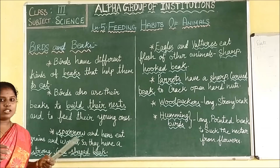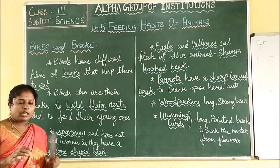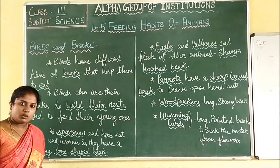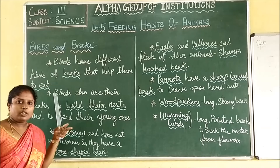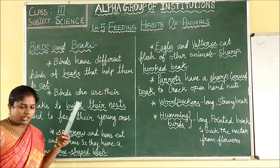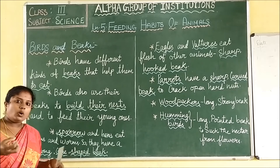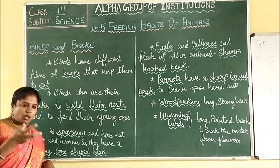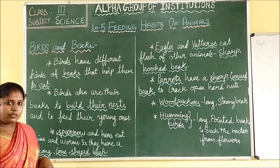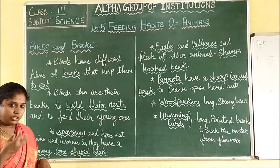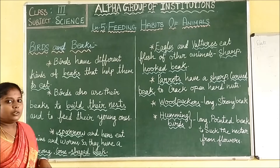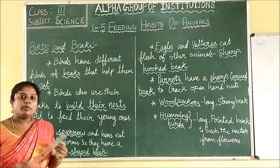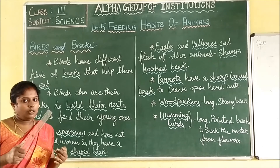And to feed their young ones. While flying, birds will be having two legs, and they can't carry things with their wings. So to carry things, the birds will use their beaks. Whatever food or whatever it wants to catch, it will carry using its beak. It uses the beak to build the nest and to feed their young ones.